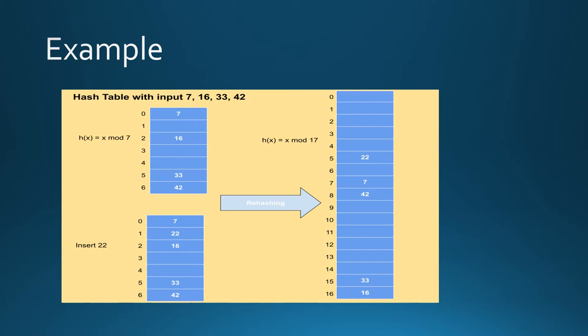By using the hash function, 7 is inserted at the key 0, 16 is placed at the key 2, 33 is placed at the key 5 and 42 is placed at the key 6. Now I want to insert 22 into the hash table. So it is placed at the key 1.